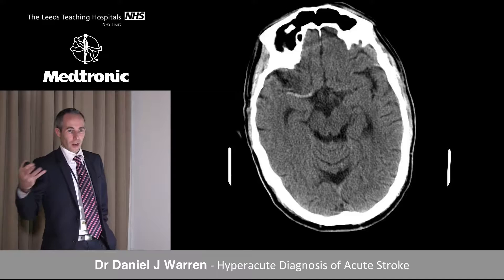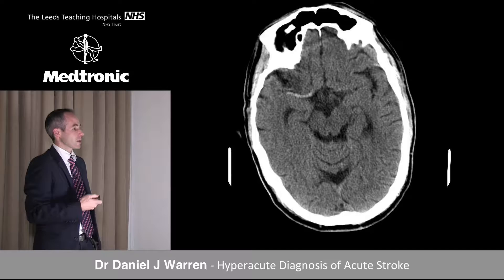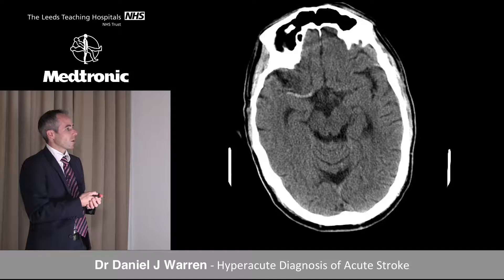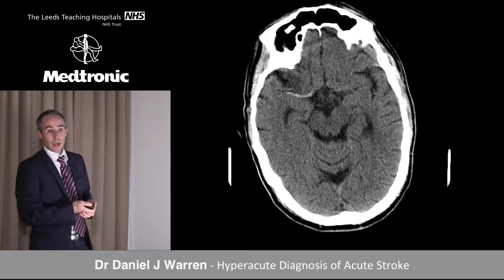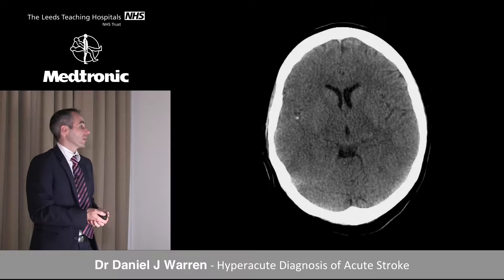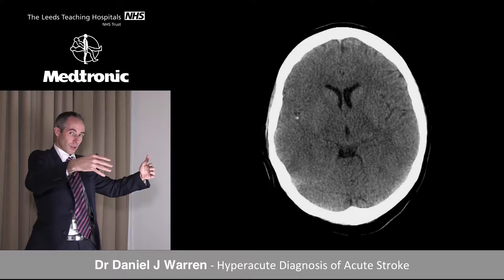Beyond the subtle parenchymal changes, vessels need close interrogation on CT. On this non-contrast study we have paired structures. There are not many things bright on CT — calcium, hemorrhage, proteinaceous material. Here there's something bright in this area. It's not hemorrhage because it's not dependent or layering against the brain parenchyma — this is a tubular structure. This is a good long length of thrombus within the proximal MCA. CT angiography would further define this.